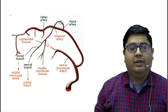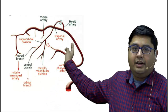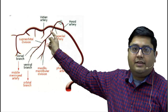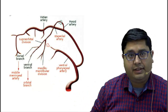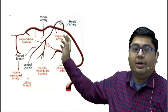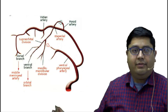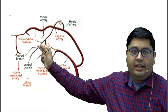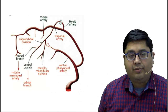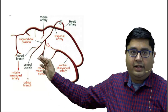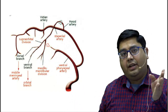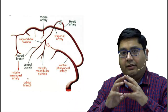The stapedial artery arises from the internal carotid artery, passes through the stapes, and continues — its proximal segment is known as the hyoid artery. The stapedial artery further divides into two divisions: the upper division, known as the supraorbital division, and the lower division, which further divides into maxillary and mandibular branches. At this stage, all of this is still coming from the internal carotid artery.